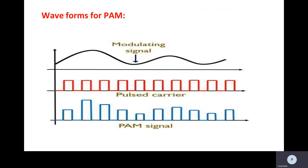These are the waveforms of PAM. The first one is the message signal, also called the modulating signal, information signal, or source signal. The second one is the pulsed carrier, which contains the pulses. The third waveform is the pulse amplitude modulated signal. If you observe the third waveform, the width and position of the pulses are constant, but only the amplitude changes — those are the waveforms of PAM.